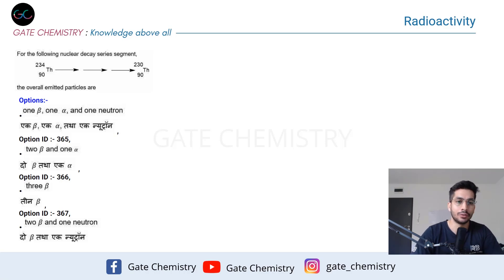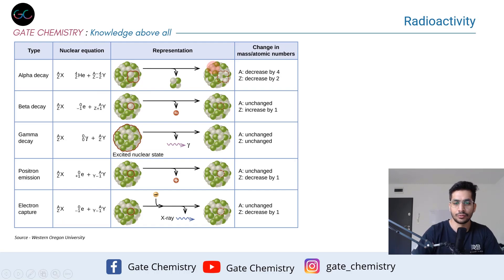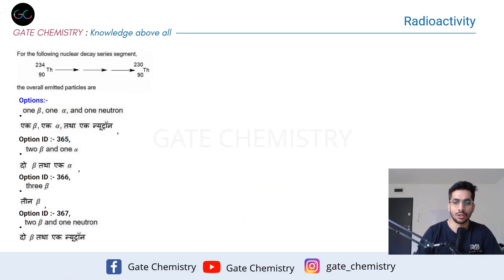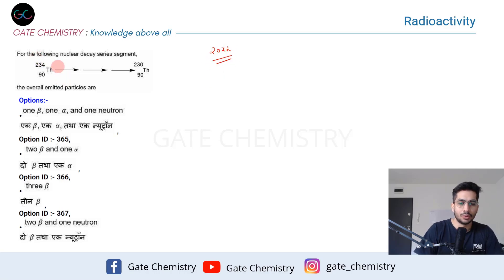Let's see how we do these questions. I'm not just going to tell you about this particular question, but I'm going to give you a crux of radioactivity — what are the different forms of radioactive decay and what changes occur in them. This question is from your CSIR exam, June 2022.